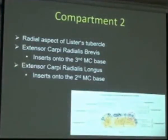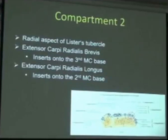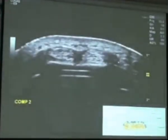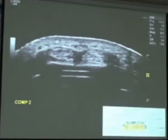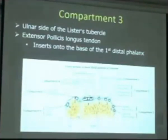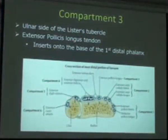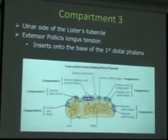Moving a little more dorsally, we come to compartment two, which houses the extensor carpi radialis brevis and extensor carpi radialis longus tendons. These are the two tendons here — compartment one is over here, and you can see the nice round tendons in transverse with the extensor retinaculum going over the top. The next one across is compartment three, which houses the extensor pollicis longus, and this extends down onto the base of the thumb's distal phalanx.